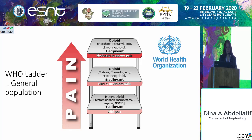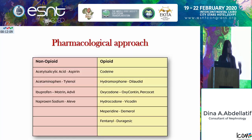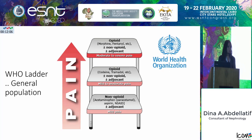For the general population using the pain ladder, in mild pain we start with a non-opioid analgesia plus or minus an adjuvant. If the pain is severe or the patient is not responding to the first class, we add another class of analgesia, and then a third according to the intensity of the pain and the patient's response.